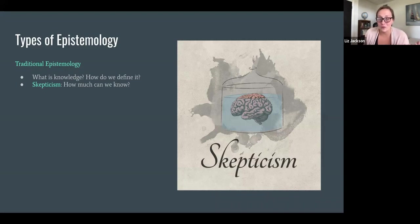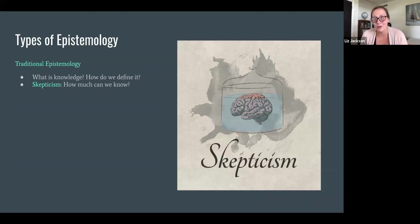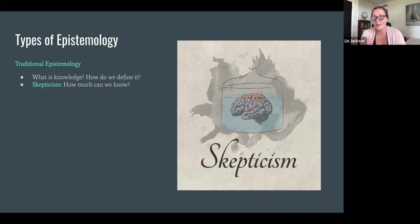Traditional epistemology also concerns the question of skepticism — that's the question of how much we can know. You might notice in this picture there's a brain in a vat. Some people have proposed that we can't even know that we have hands, or that there's a table in front of you, because you could be a brain in a vat or plugged into the Matrix. In future videos, we'll talk a lot more about skepticism and responses to it.